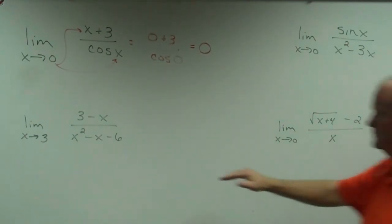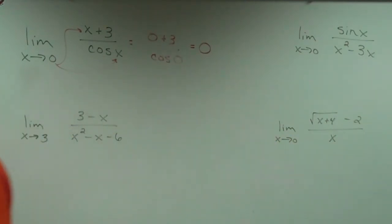Second one. Does it blow up? Yes. 9 minus 3 minus 6. Blows up. Jumps out at you as a what kind? Factoring. Factoring.